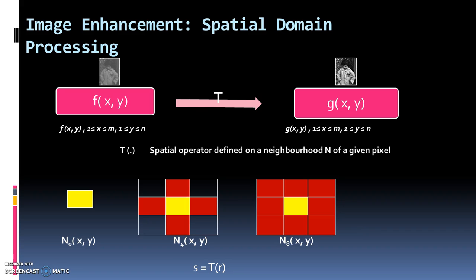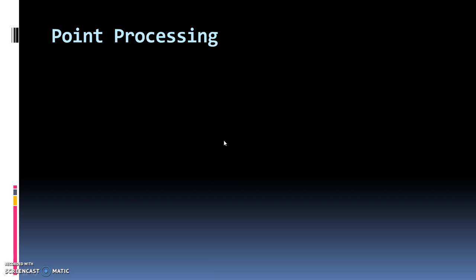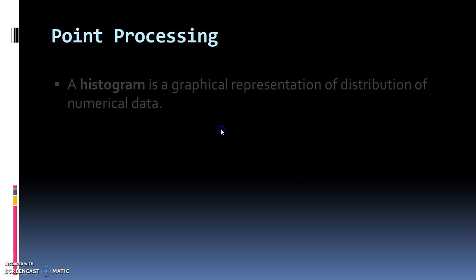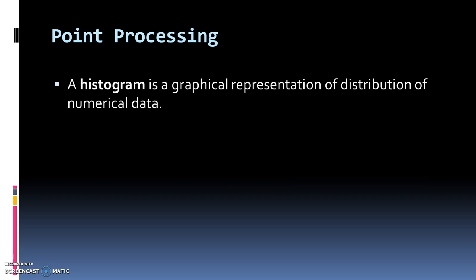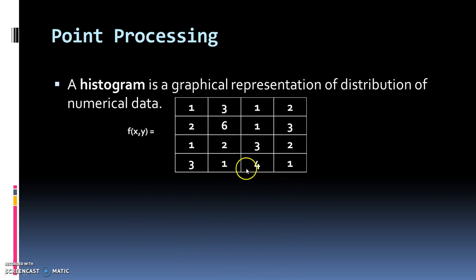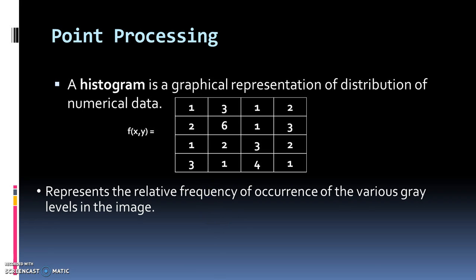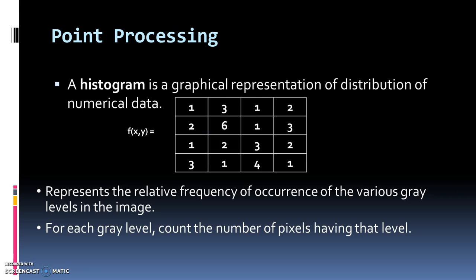Now let's look at the different types of processing. First, we take point processing. The simplest one available is the histogram. From statistics, we know a histogram is just a graphical representation of numerical data. Let's take an image f(x,y) — a 4×4 image with these pixel values, which are called gray levels. This is a 3-bit resolution, so the lowest value is 0 and the highest is 7. The histogram gives a table of how many times every pixel value has occurred in the image, counting the number of pixels for each gray level.